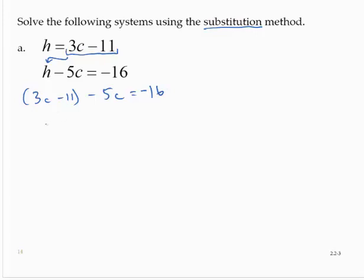Simplifying the left-hand side, I would have negative 2c minus 11 equals negative 16. Adding 11 to both sides of the equation,